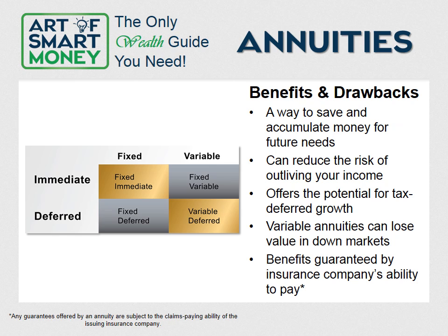Investors also have the option of choosing between fixed and variable annuities, which differ in how they generate earnings and the amount of risk involved. A fixed annuity offers a guaranteed interest rate for a certain period of time; at the end of the period, the insurance company will declare a new rate and guarantee period. Most fixed annuities will have a minimum interest rate guaranteed for the life of the contract, meaning you'll never receive less than that guaranteed minimum. Fixed annuities typically appeal to investors who feel more comfortable knowing exactly how much they will receive each year.